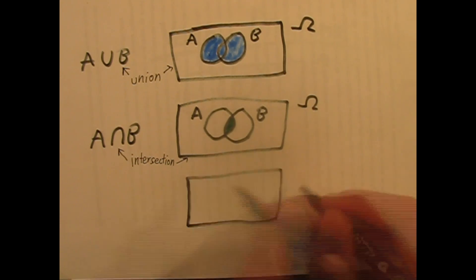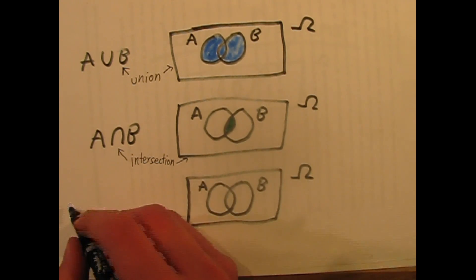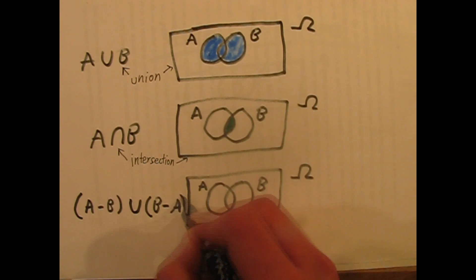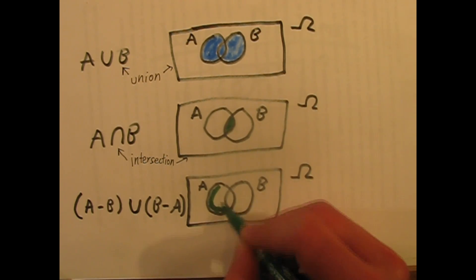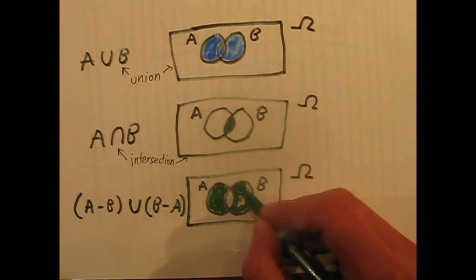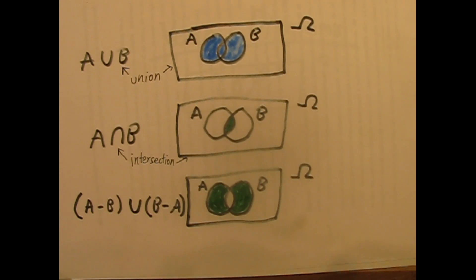And then, of course, you can go to more complicated operations, such as the union of A-B and B-A, which is equal to the union of A and B minus the intersection of A and B.